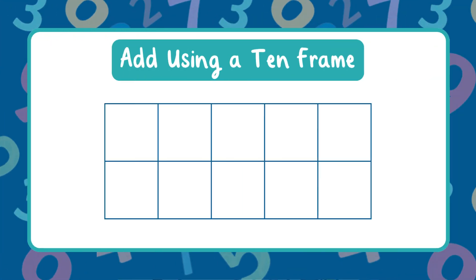Our next strategy is to use a ten frame. A ten frame is a rectangle made of ten boxes — five on the top row and five on the bottom. It helps us see numbers clearly and how they add up to ten.